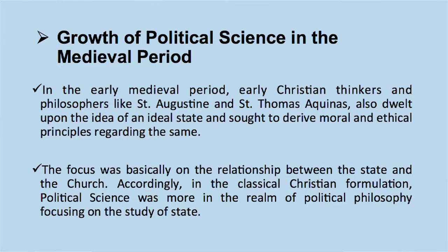Let us now examine the growth of political science in the medieval period. In the early medieval period, Christian thinkers and philosophers like Saint Augustine and Saint Thomas Aquinas dwelt upon the idea of an ideal state and sought to derive moral and ethical principles regarding it. Basically, they focused on the relationship between the state and the church. Accordingly, in the classical Christian formulation, political science was more in the realm of political philosophy, focusing on the study of the state.